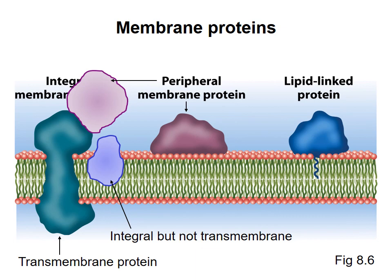During protein purification procedures, integral membrane proteins and lipid-linked proteins cannot be removed from the membrane without disrupting the membrane. When purifying such proteins, you normally add detergents to the sample. Detergents are small amphipathic molecules that disrupt the membrane and coat the hydrophobic parts of the protein to keep them stable. In contrast, peripheral membrane proteins can often be removed from the membrane without disrupting the structure of the membrane and without detergents. Because of this, integral membrane proteins are generally harder to study than peripheral or water-soluble proteins.